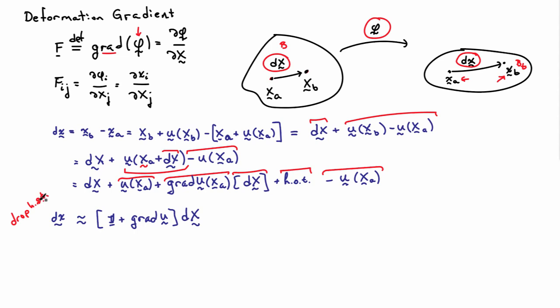So what I'm left with, if I drop the higher order terms, will be that d little x is approximately equal to the identity plus the gradient of U acting on d big X. So now we can see something that looks like a tensor acting on a vector gives me a new vector. And let's look at what that tensor is in the square brackets there.